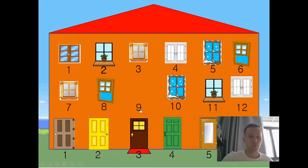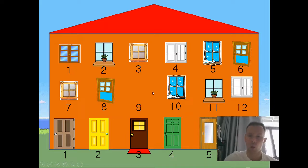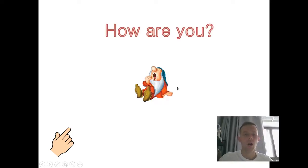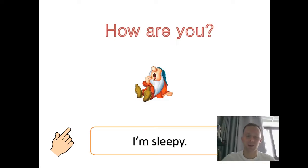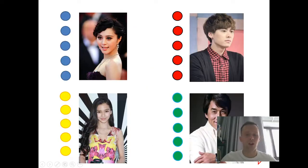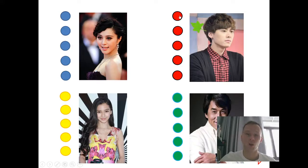Then we're going to go to team number two. I choose window 10. Let's take a look. 'How are you?' 'I am sleepy.' Good job! So if they get the answer correct, you're going to give them a point. This is team two. When we give the points, we're going to put some things on their heads.